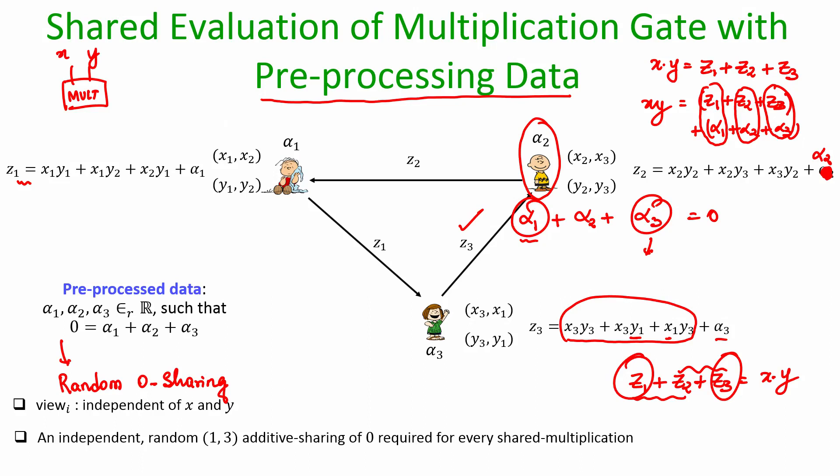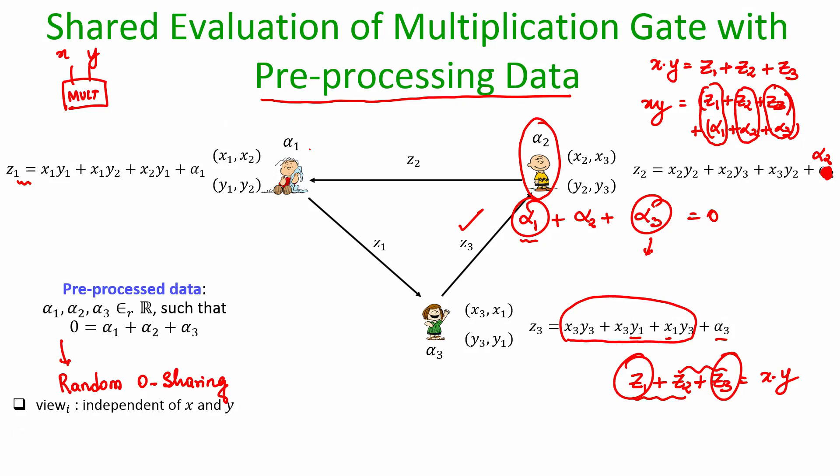This method is very efficient: when evaluating the multiplication gate, each party just needs to send one ring element to one party. This is unlike the GRR degree reduction or Beaver circuit randomization method, where for each multiplication gate two values need to be publicly reconstructed — the masking of the gate inputs — and then you apply Beaver's linear function. Here we do not need to publicly reconstruct any value; just a local randomization and send to one neighbor. That is why this is a very efficient method.